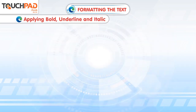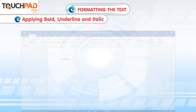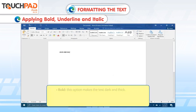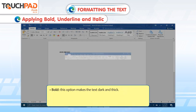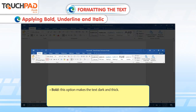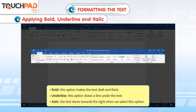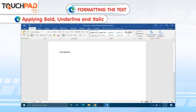Applying bold, underline and italic. Bold: this option makes the text dark and thick. Underline: this option draws a line under the text. Italic: the text slants towards the right when we select this option.